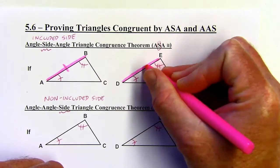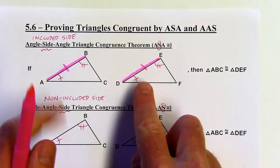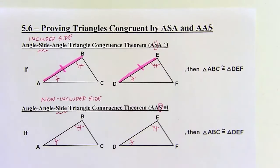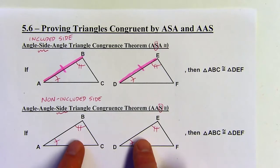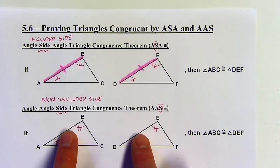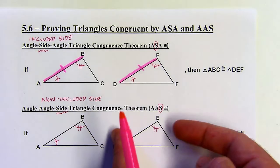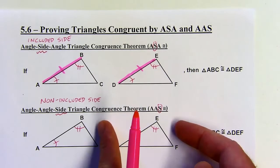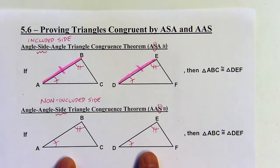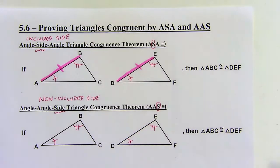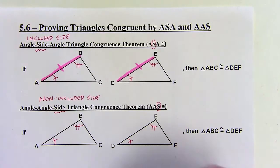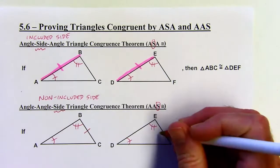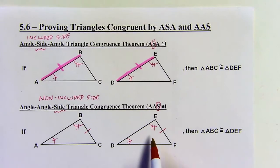When you have two angles and an included side like that, then the triangles are going to be congruent by ASA. In the second case, I don't want to use the included side — I want to use either the top-right or bottom side. Both of those are non-included, so let's use those. That would be AAS.